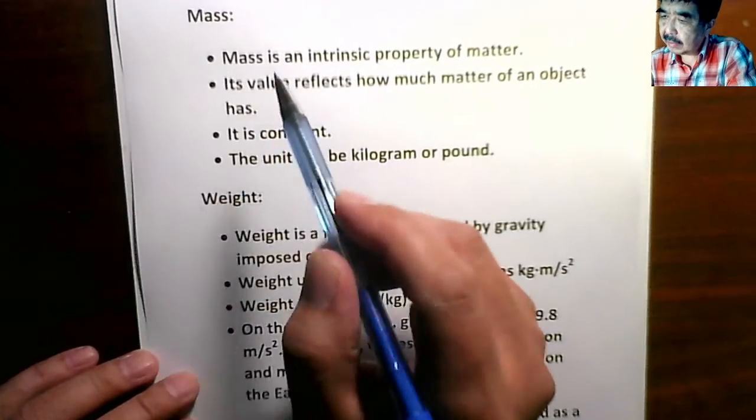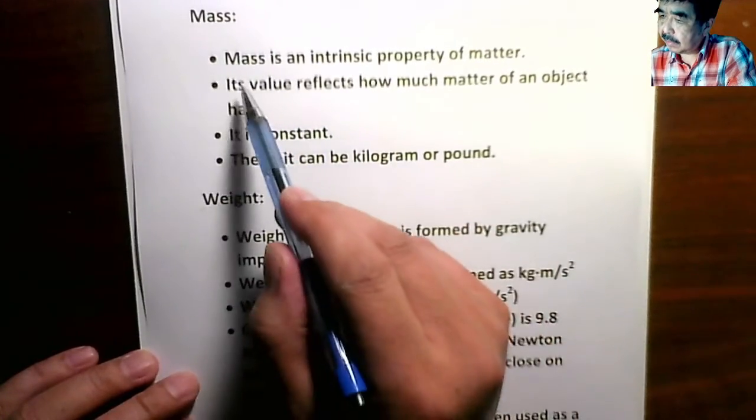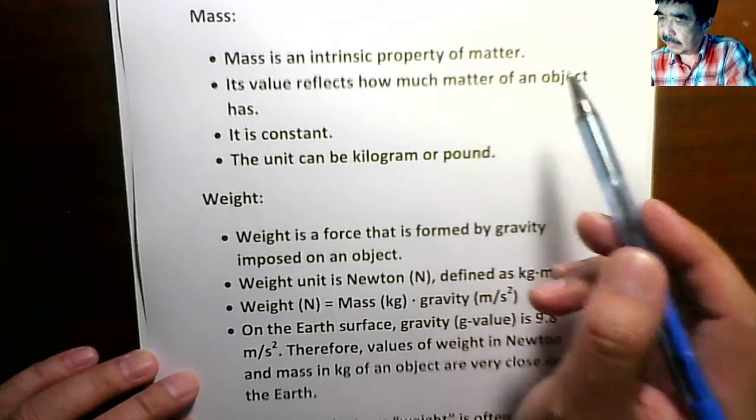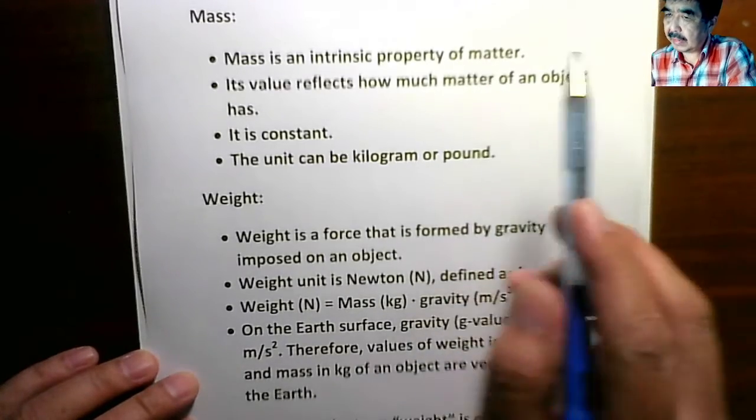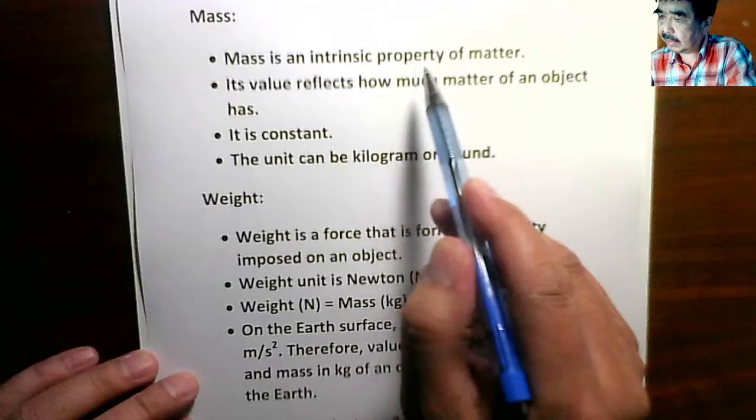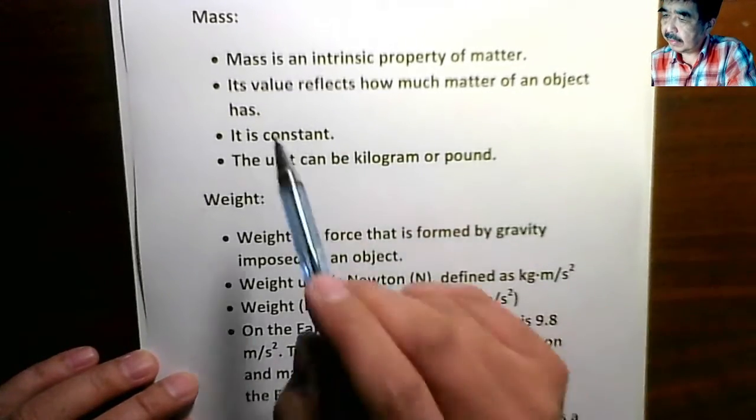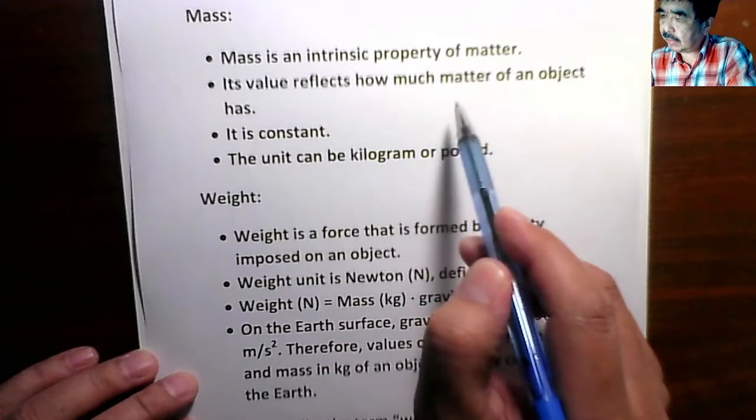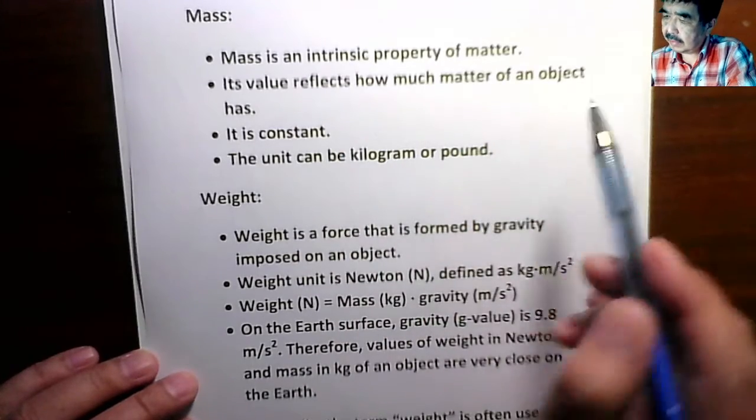Okay, the first thing is mass. Mass is an intrinsic property of matter. Okay, we have to emphasize the intrinsic property. Its value reflects how much matter of an object has.